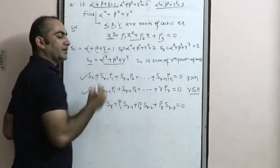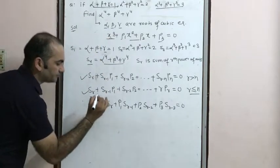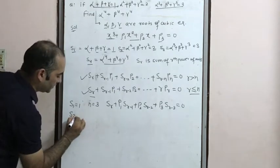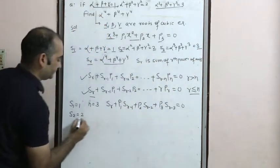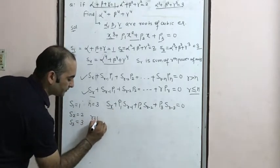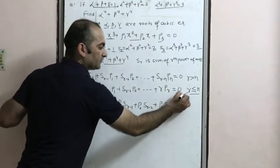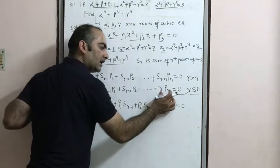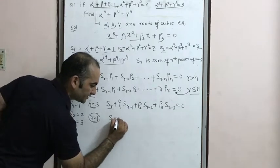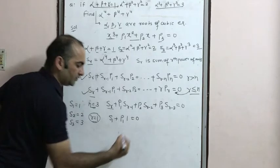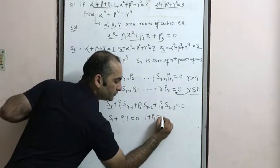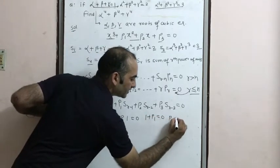For this cubic equation, n=3, and S1=1, S2=2, S3=3. Putting r=1 (r ≤ n), we get: S1 + p1·1 = 0, so 1 + p1 = 0, giving p1 = -1.